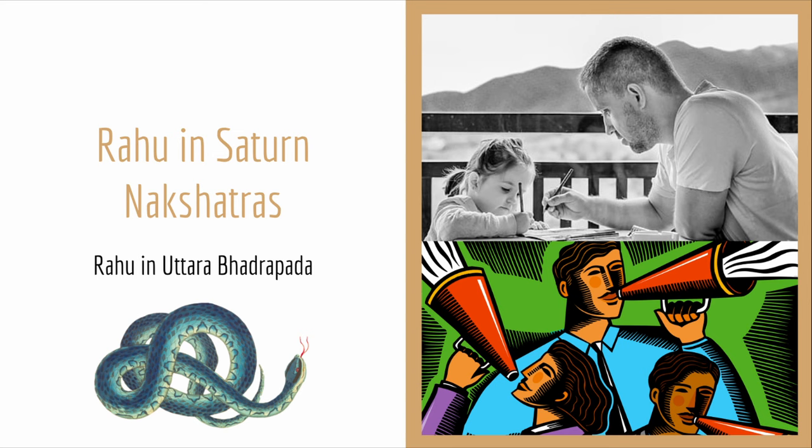Uttara Bhadrapada is the last Saturn-ruled asterism, falling in the middle part of Pisces. It deals a lot with transformation similar to Anuradha — going from the lows to the heights, giving the ability to rise from humble or difficult beginnings. There's a lot of strength in Uttara Bhadrapada. At the same time, it is a very emotional and sensitive position, and there may be a tendency to make wrong decisions based on emotion and impulsive choices early on in life. Uttara Bhadrapada also comes with a very old soul, a very mature and insightful understanding of spiritual knowledge. This can be a position that has a fascination with the occult, mysticism, astrology, wanting to dive deeper into the mysteries of life — very deep and introspective.